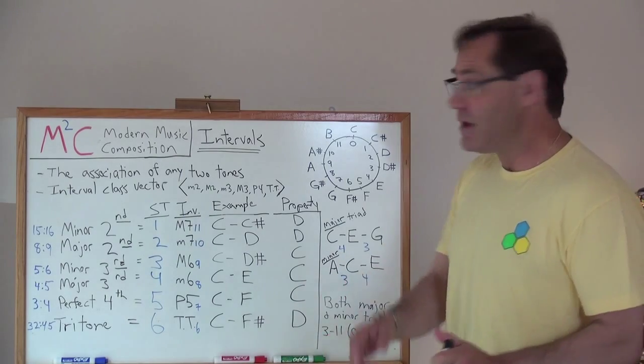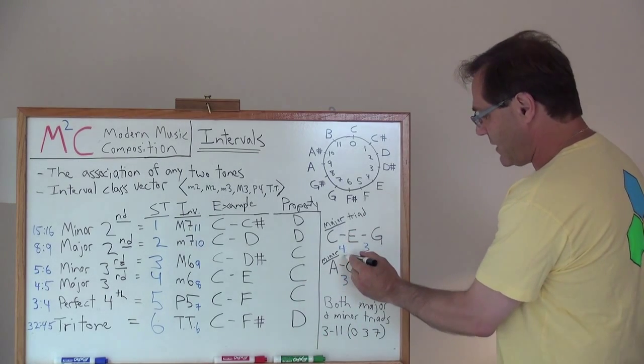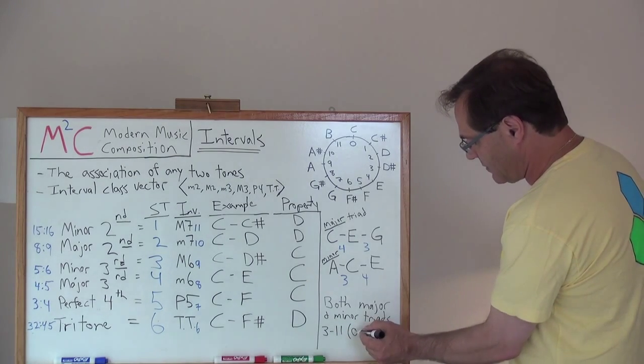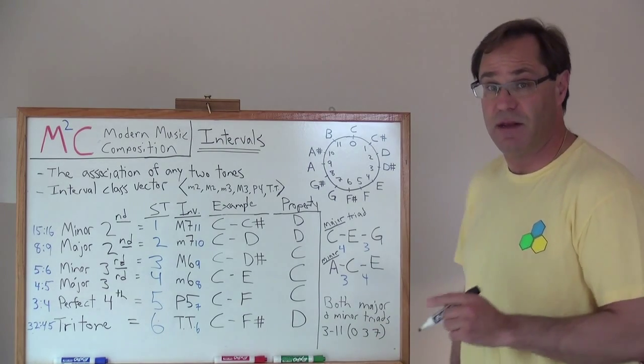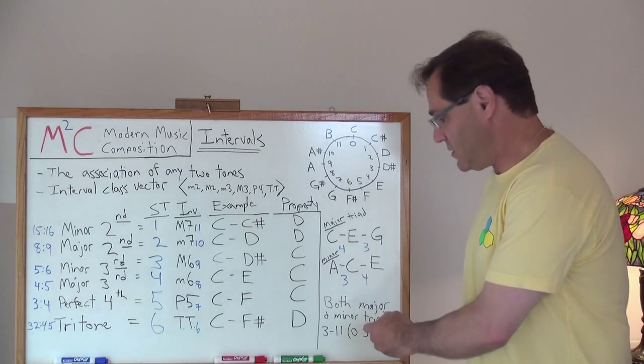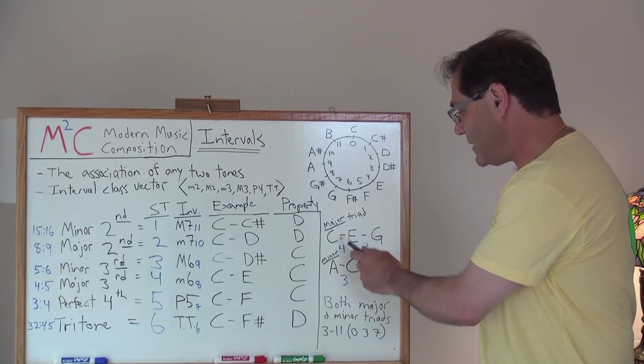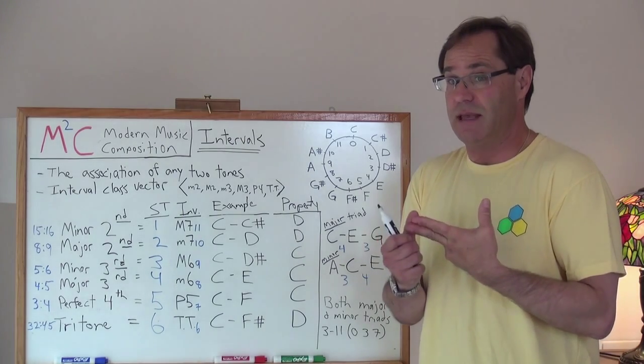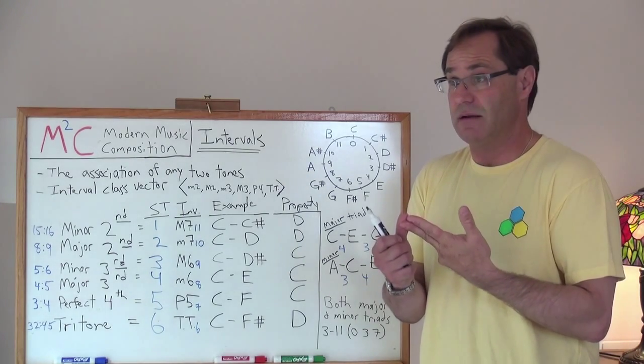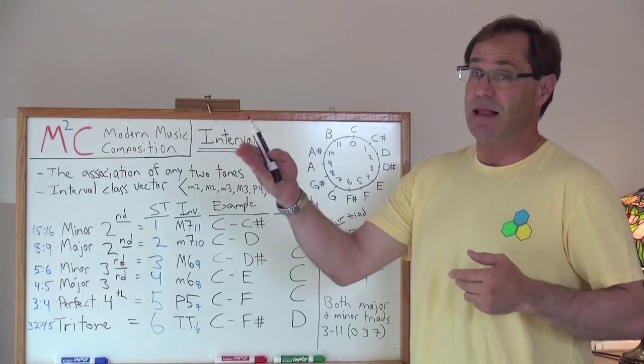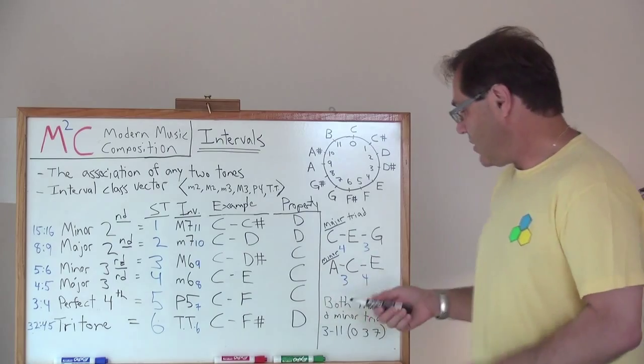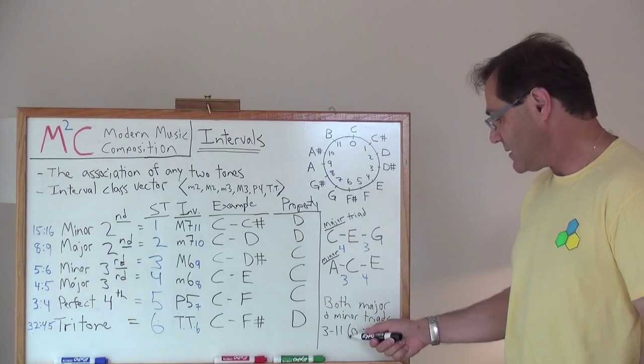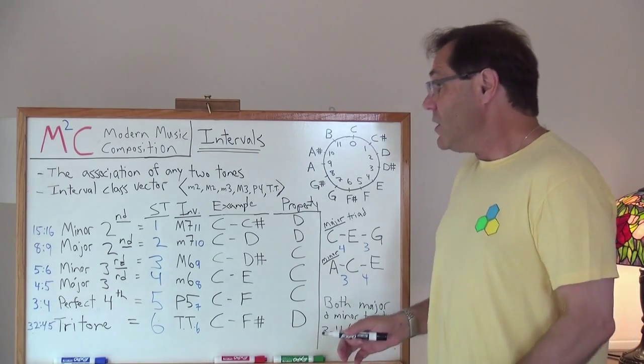Well, with respect to set theory, both the major triad and the minor triad fit into set three eleven. And that's tones zero, three, and seven. And actually I'll spend a video explaining this to you and showing exactly how both the major and the minor triads fit into three eleven. Just like the major and minor scales, the major diatonic scale and the minor diatonic scale fit into set class seven thirty five. Well, just so, the major triads and the minor triads both fit into set class three eleven.